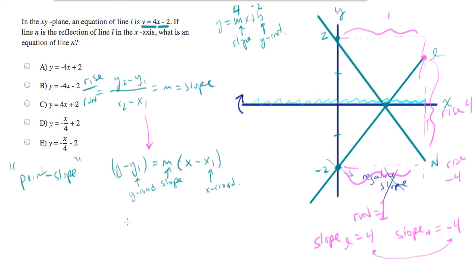So now we can plug in because we have a point and we have a slope. The coordinates on this point are 0, 2. So let's plug in and we'll end up with y minus y1, which is 2, equals m, which is negative 4, times x minus x1, which is 0.